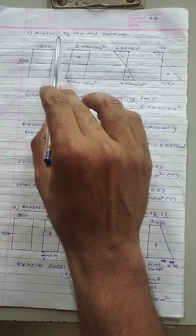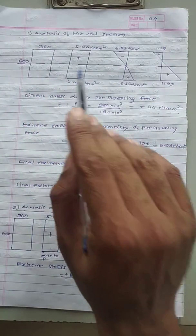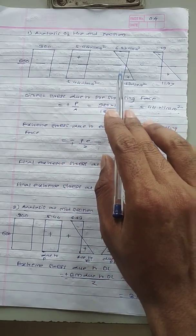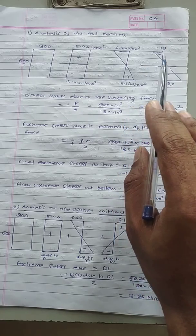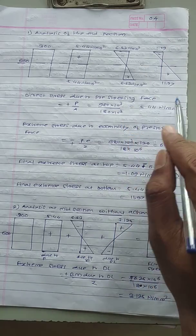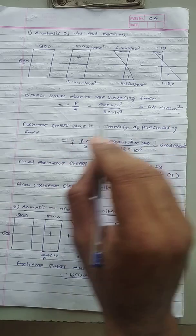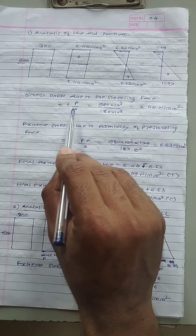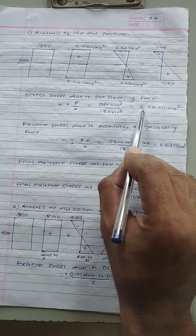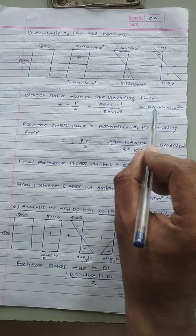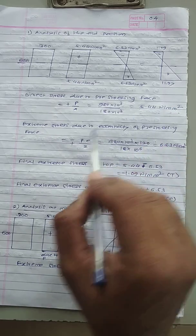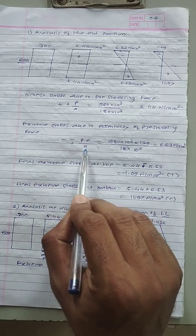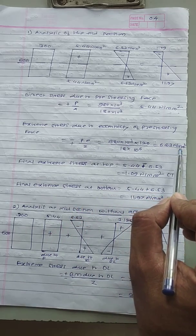Analysis at the end section: at the end section, only direct stress and stress due to eccentricity are induced — there is no bending stress, because for a simply supported beam the bending moment at the support is zero. Direct stress due to pre-stressing force = P/A = 5.44 N/mm² (compression, positive). Extreme stress due to eccentricity = P×E/Z = 6.53 N/mm².